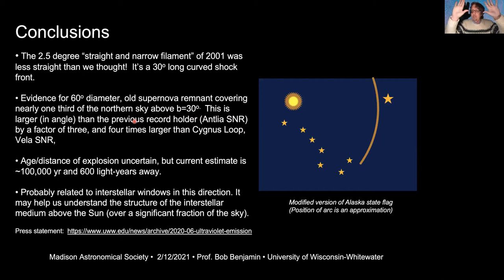This is much bigger in angular size than any previously known supernova remnant — four times larger than the Cygnus Loop. We don't know the distance precisely or the age, but we estimate roughly 100,000 years old, 600 light-years away. It's probably related to the fact that this direction of sky has very low extinction — very low dust content — that people use to study things outside the galaxy. This will probably be my only discovery that can actually be plotted on a state flag.